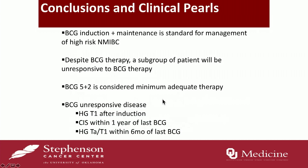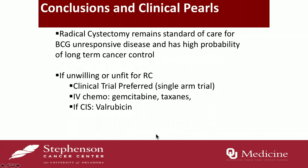In conclusion: BCG induction plus maintenance is the standard management for non-muscle invasive bladder cancer. A subgroup will fail and be considered BCG unresponsive, defined as receiving at least five plus two of BCG with one of three criteria: high-grade disease after induction, CIS within one year, or high-grade Ta within six months of last BCG. The gold standard treatment remains radical cystectomy. For patients who are unfit or unwilling, options include clinical trial enrollment, intravesical gemcitabine or taxanes, or valrubicin — FDA-approved for CIS only but without durable long-term recurrence-free survival.